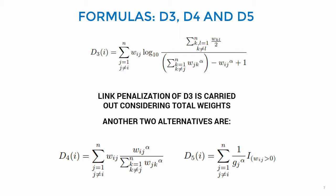D4 and D5 are other two alternatives without the logarithmic term. D4 and D5 only differ by the fact that arc weight is considered in D4 and only node degree is considered in D5.